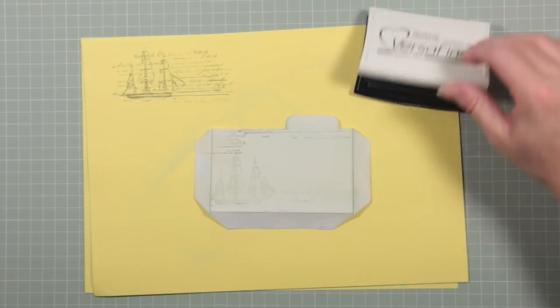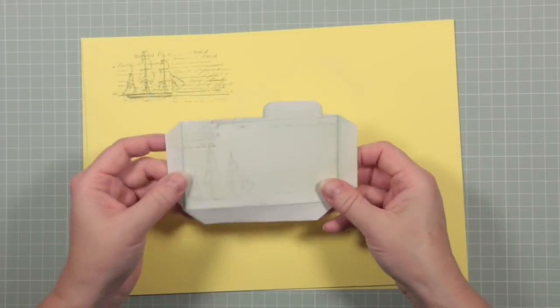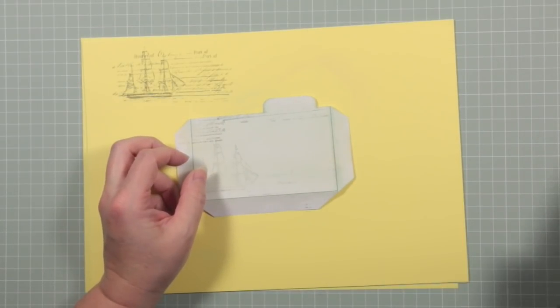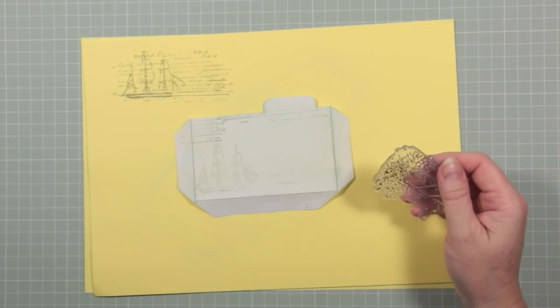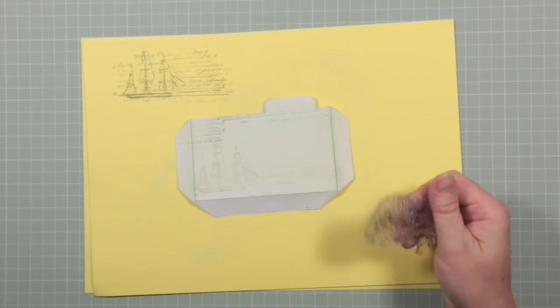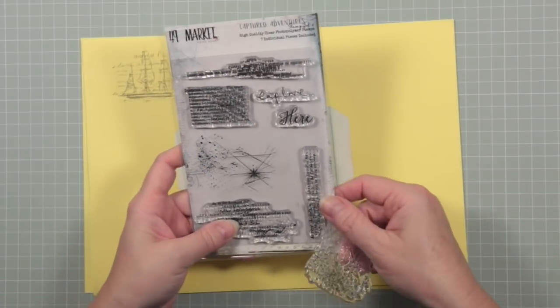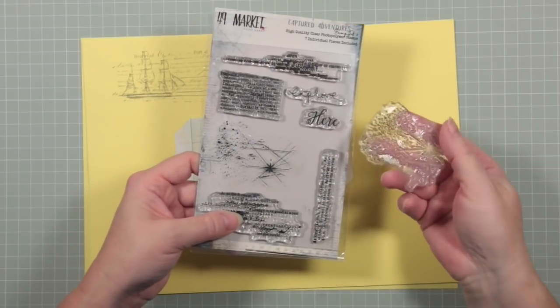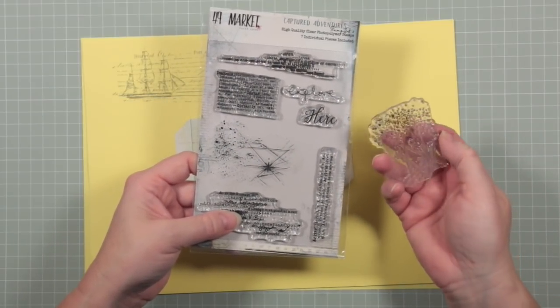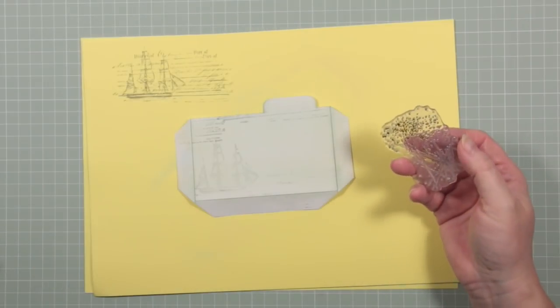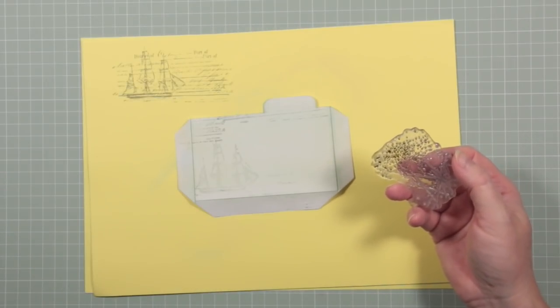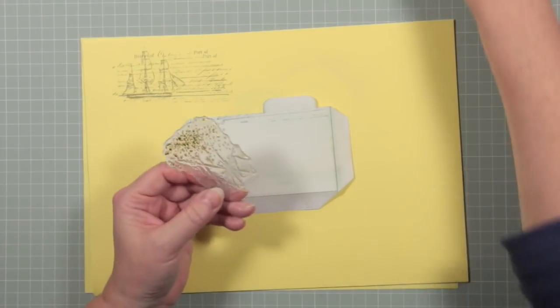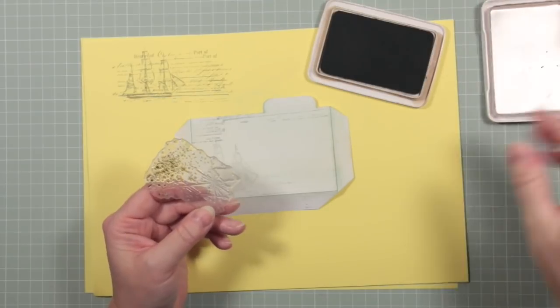I'm going to pop a little bit in the corner and you can do second and third impressions. I'm going to use a texture stamp so this is the one that came from the 49 and Market stamp set.